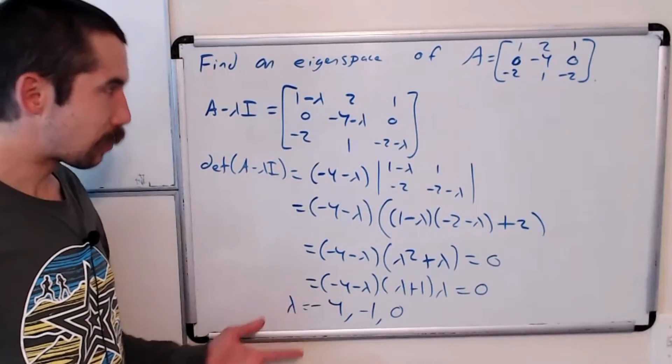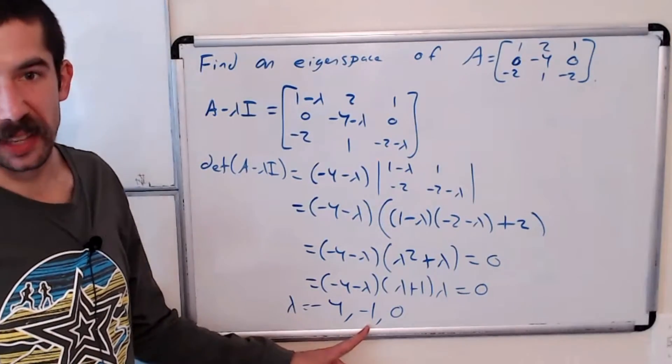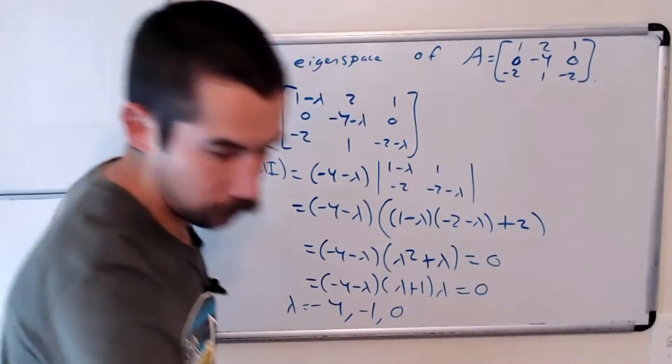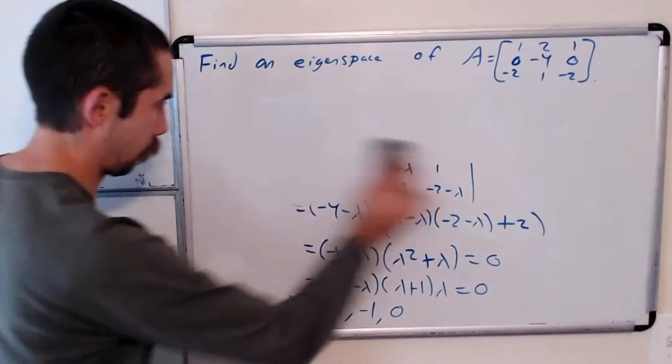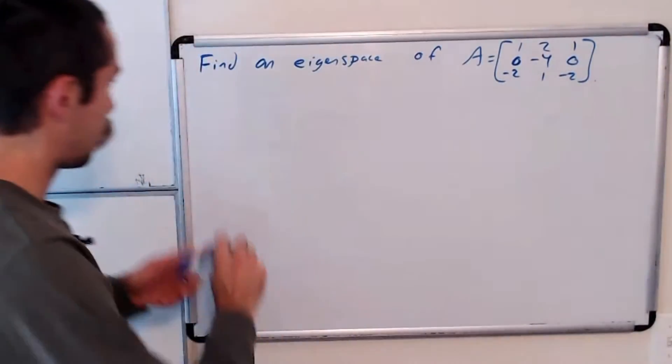Let's find the eigenspace for lambda equals negative 1. We could pick any of them, so let's look at E negative 1.